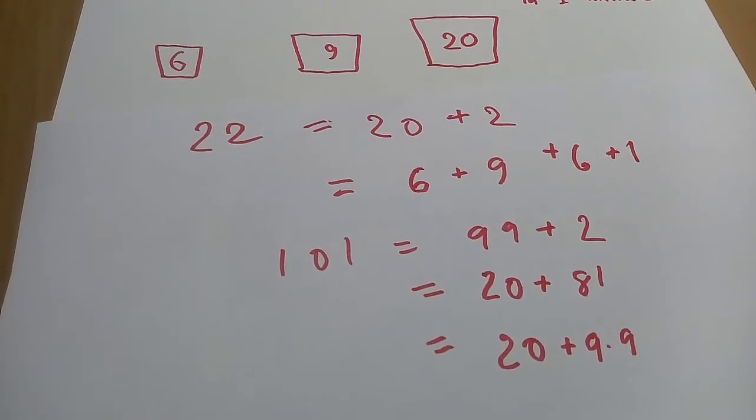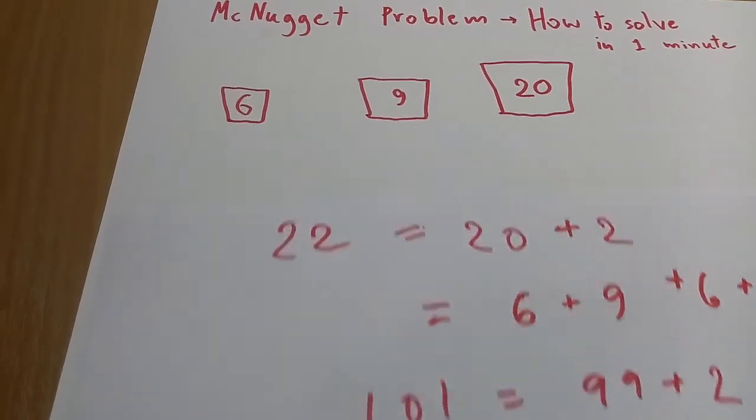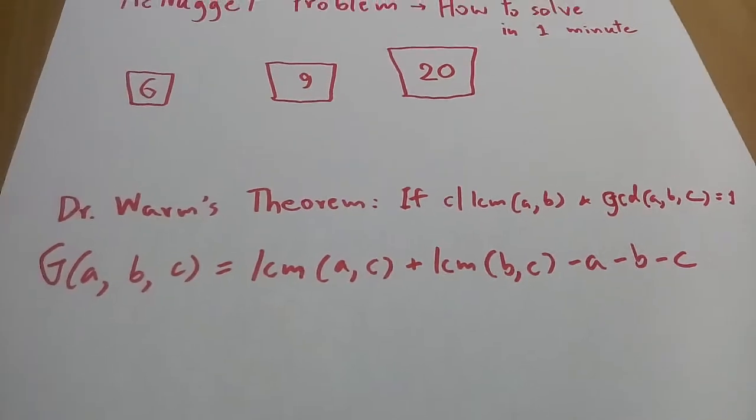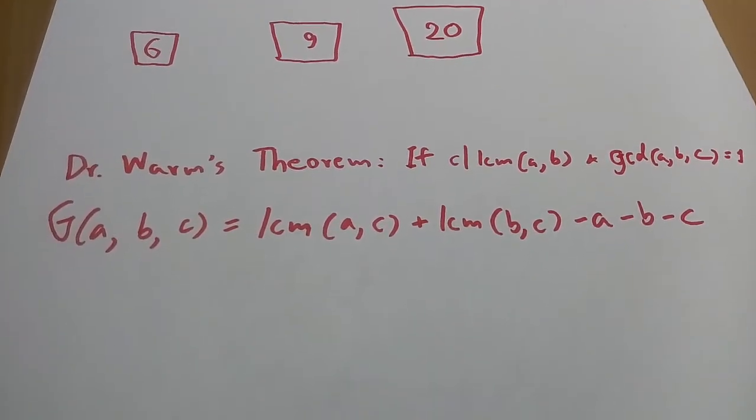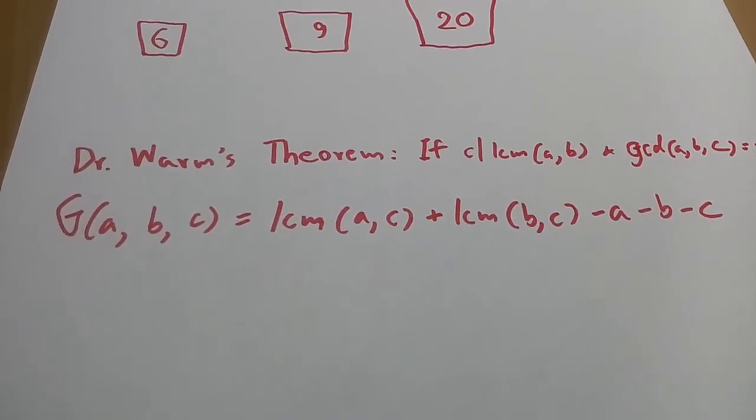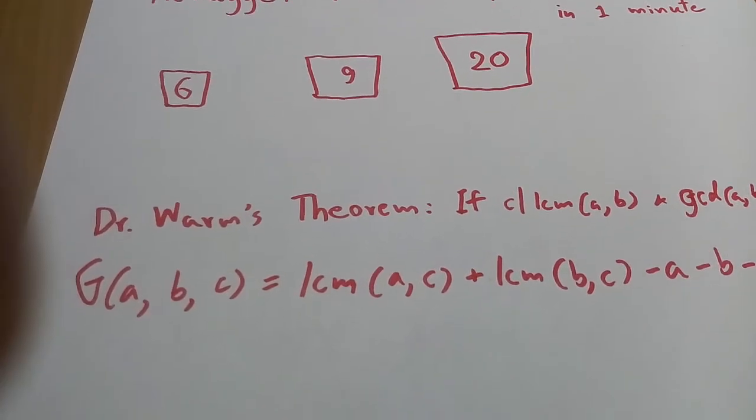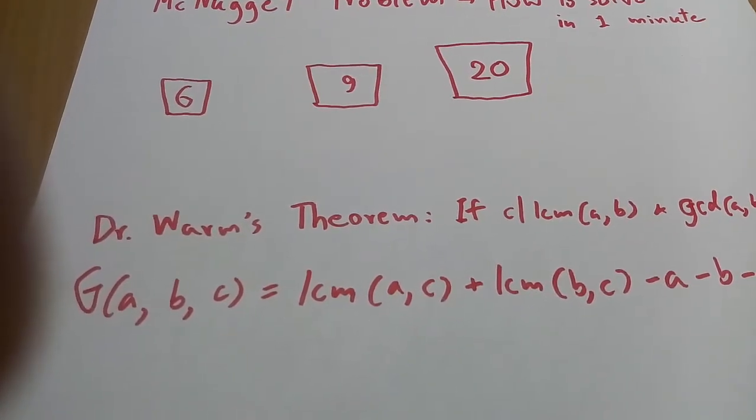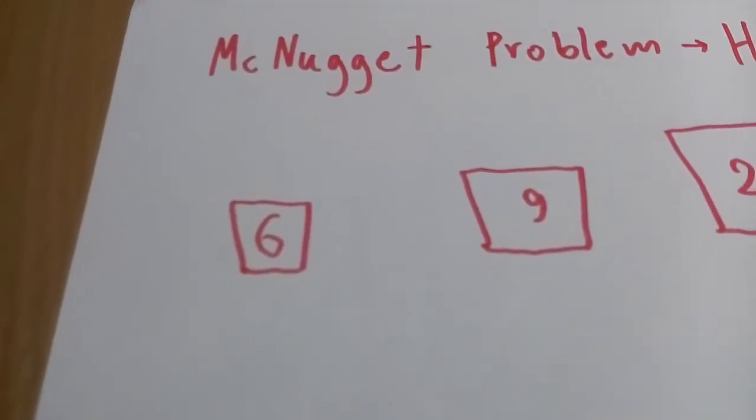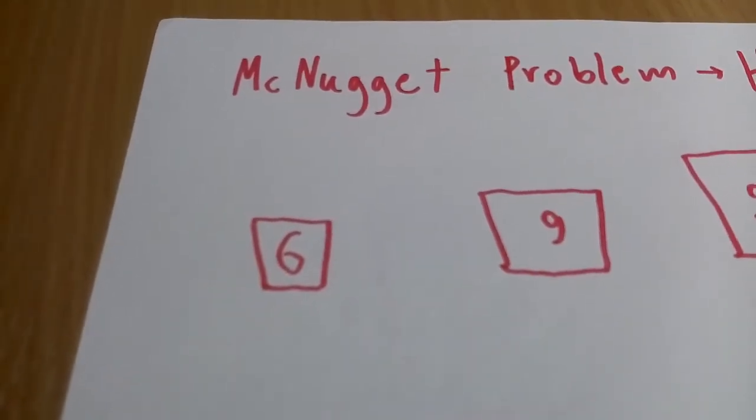If you're taking the old algorithm, it's gonna take more than a minute, so let's start one minute from now and see the theorem that can help you. It's called Dr. Wolm's theorem. It states that if for the number C that can divide the LCM of A and B—the LCM is the least common multiple—taking for example six and nine, the least common multiple would be 18.